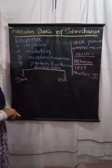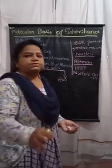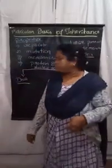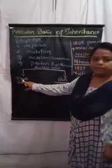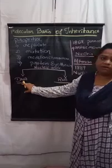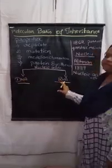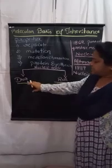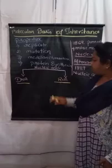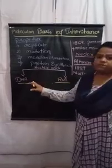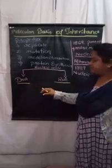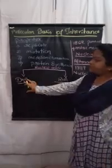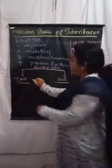There are two types of nucleic acids: DNA and RNA. DNA is also called deoxyribonucleic acid, and RNA is also called ribonucleic acid. DNA acts as the genetic material and is present in the nucleus of cells.